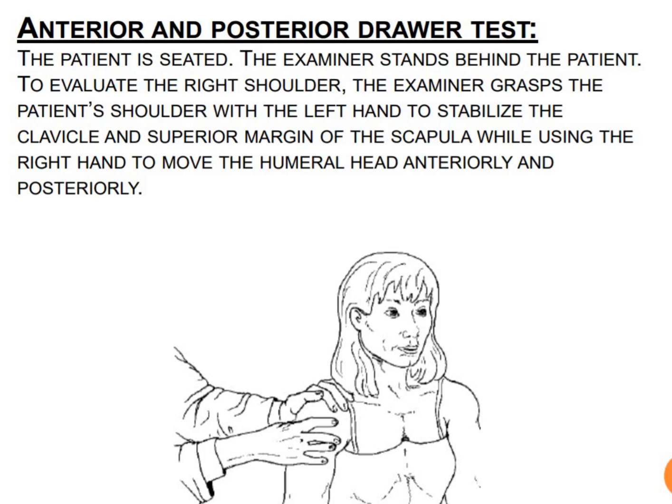Next is the anterior and posterior drawer test of the shoulder joint. The patient is seated and the examiner stands behind the patient. For the right shoulder, the examiner grasps the patient's shoulder with the left hand to stabilize the clavicle and superior margin of the scapula, while using the right hand to move the humeral head anteriorly and posteriorly — similar to the drawer tests of the knee joint. This helps identify anterior and posterior instability of the shoulder.